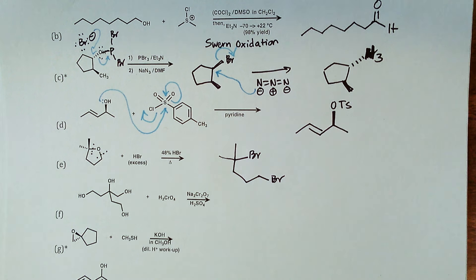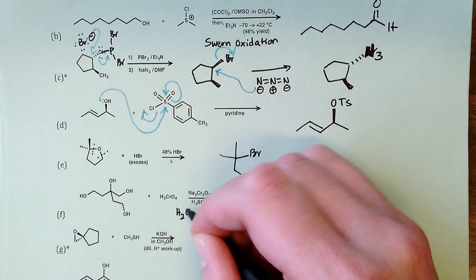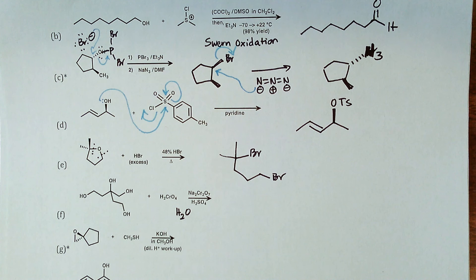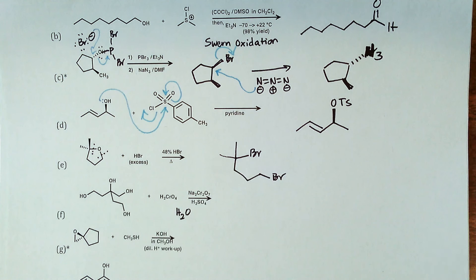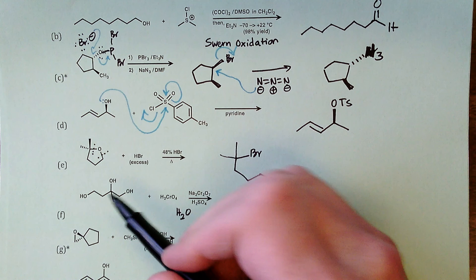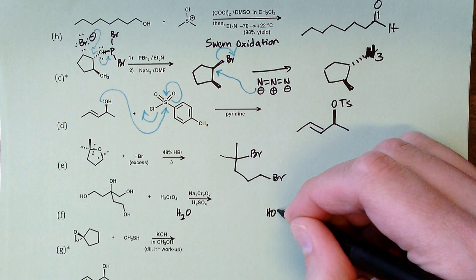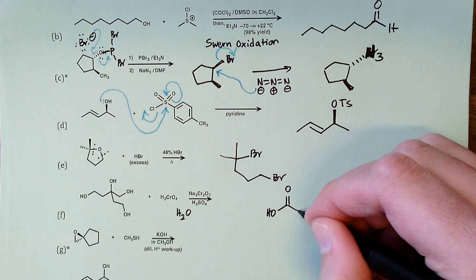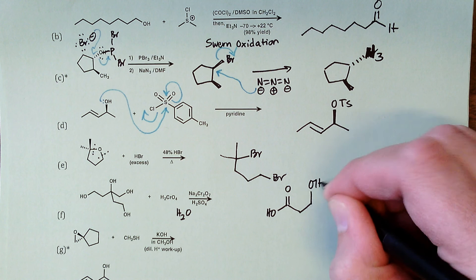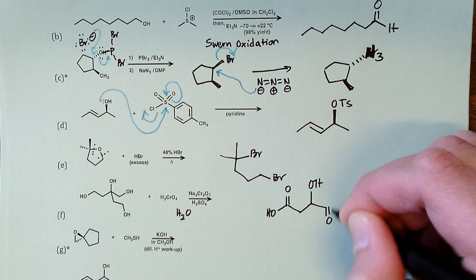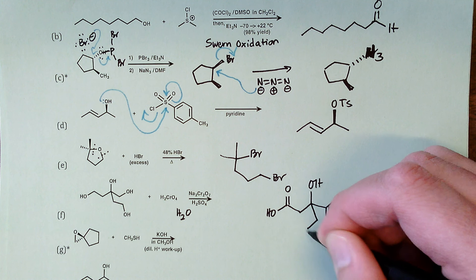Part f: chromic acid — sodium dichromate dissolved in water with sulfuric acid — oxidizes every primary alcohol to the carboxylic acid while leaving the tertiary alcohol unscathed. This reaction generates citric acid.